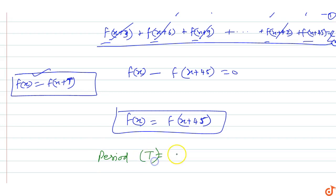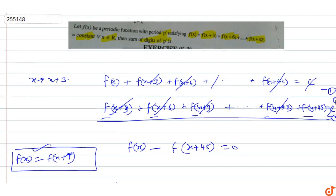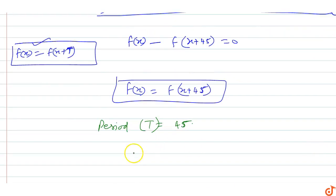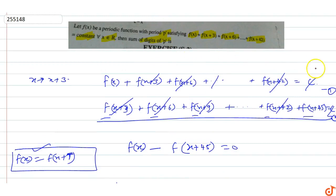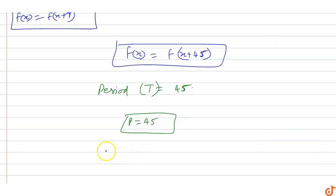So T equals 45. And we need the sum of the digits of p.